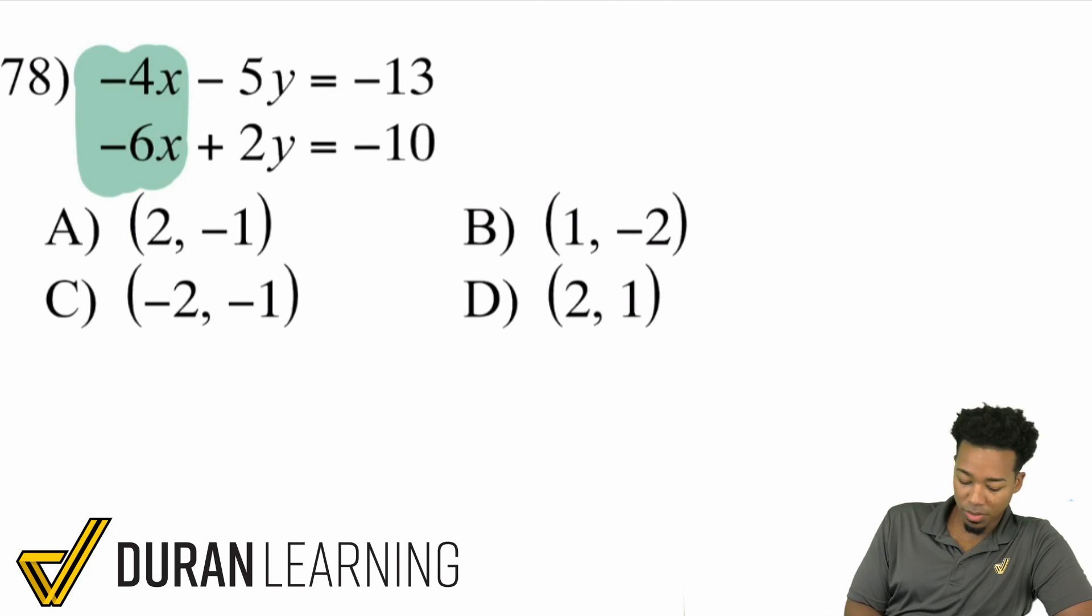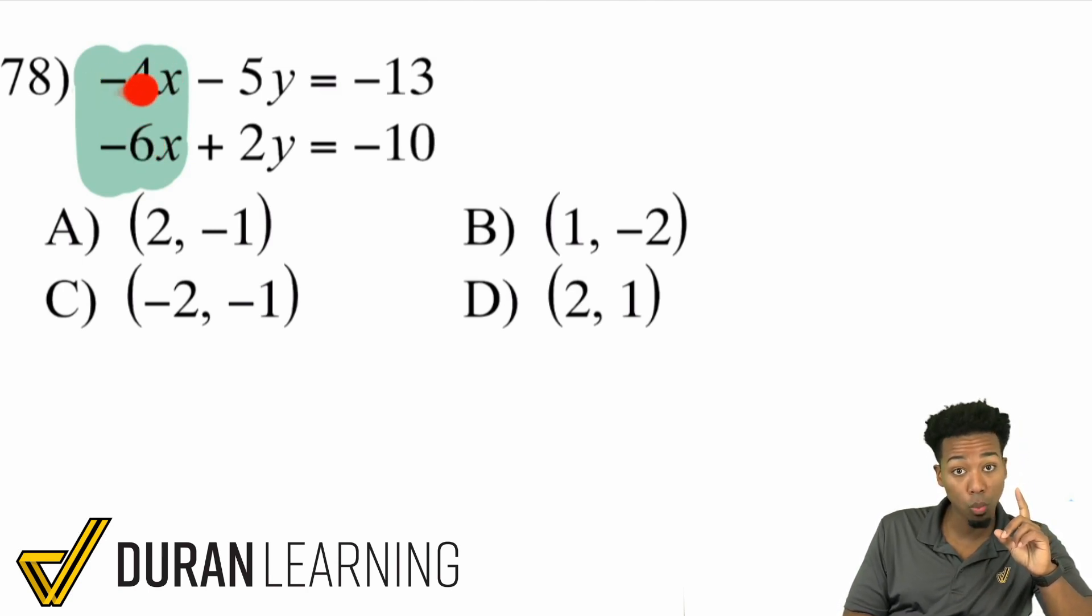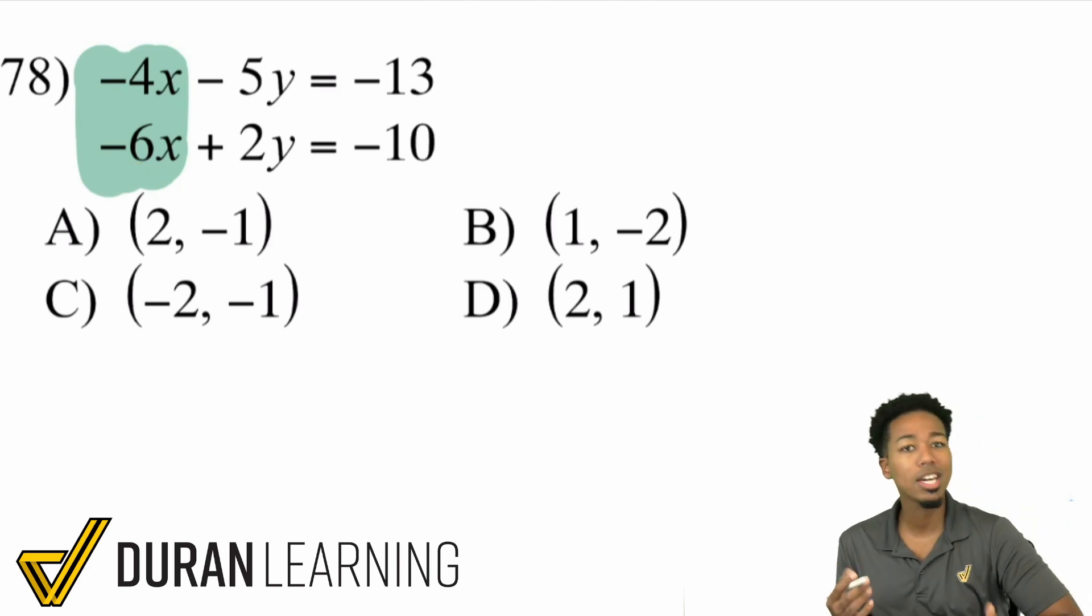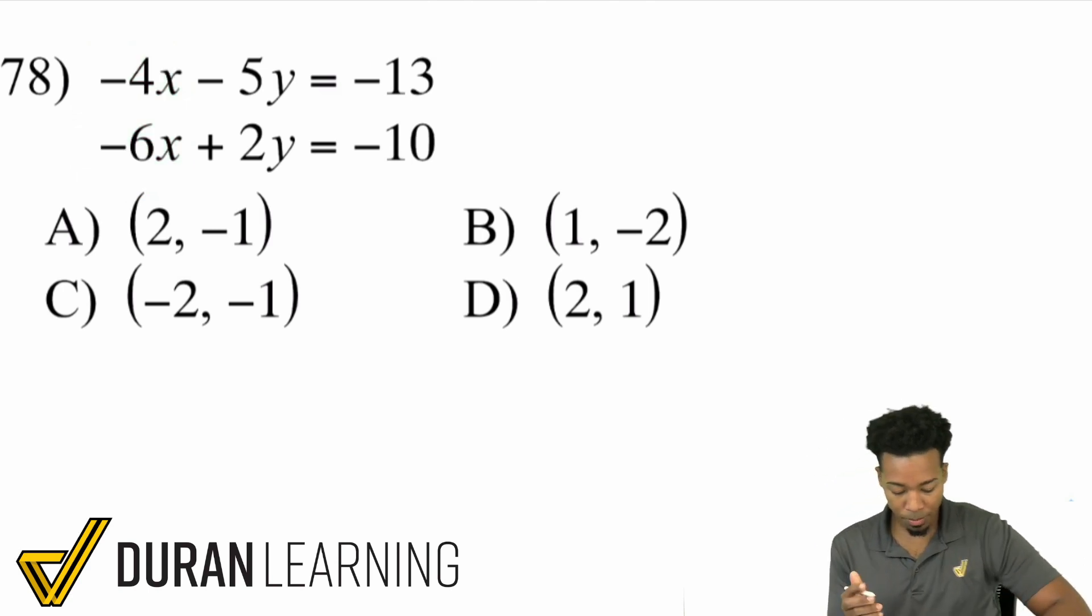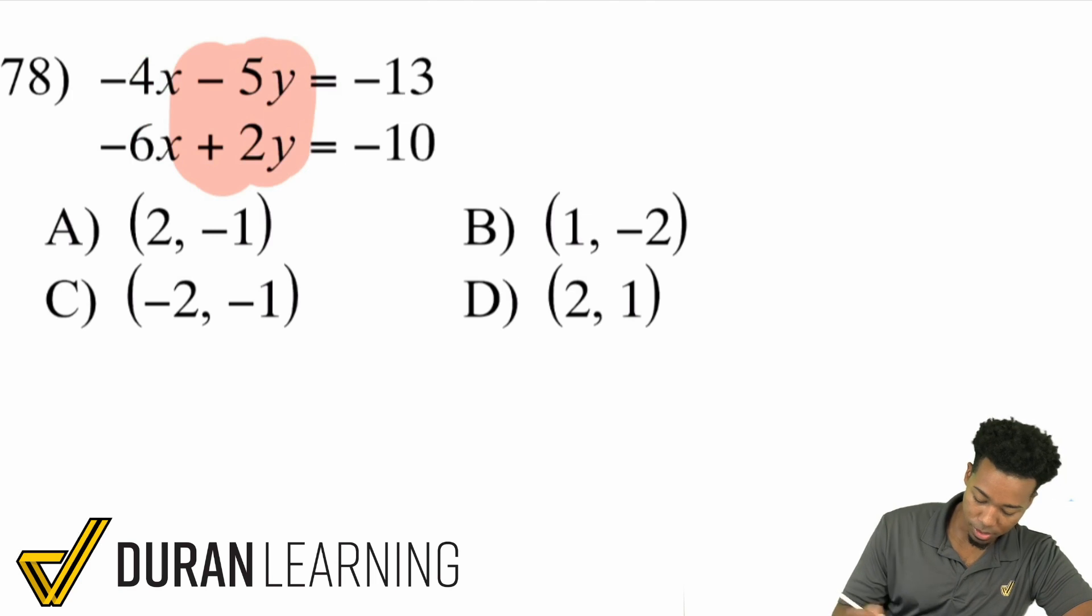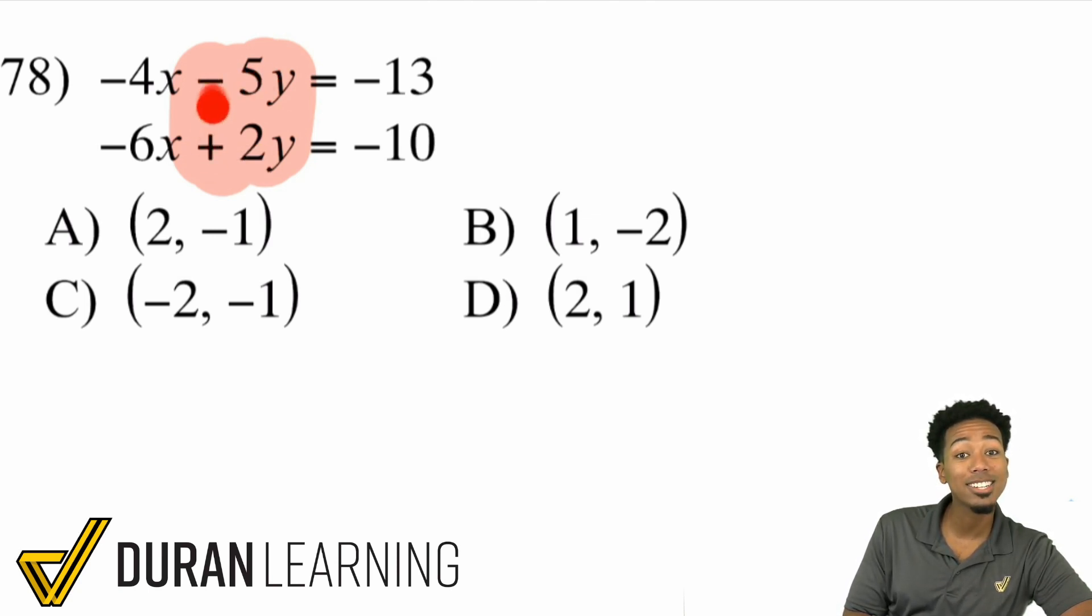So, let's just go ahead and take a look at the x values for a moment, the x variables. We have negative 4 and negative 6. You can't multiply the 4 by something to get 6. But what you can do is you can multiply this top one by 3 so you can get 12x. Multiply this one by 2 and you'll also get 12x. Or, if you wanted to, you could look at the y variables. If you look at the y variables, that's a negative 5y, positive 2y. I can multiply this top one by 2, this bottom one by 5. That way, they'll both be negative and positive 10y, allowing you to eliminate that.